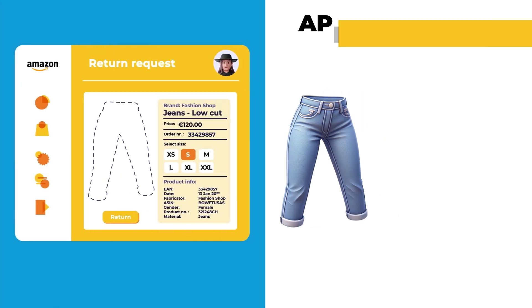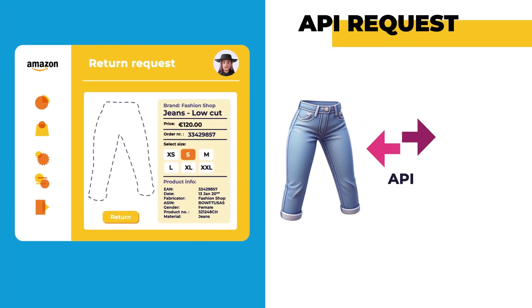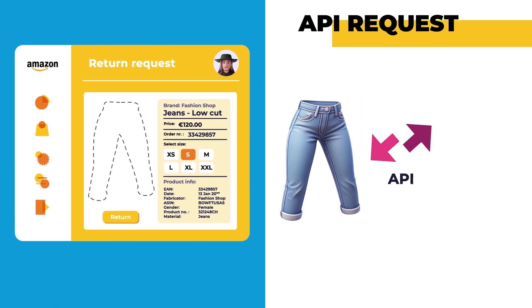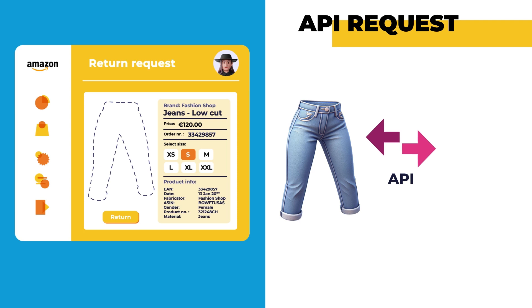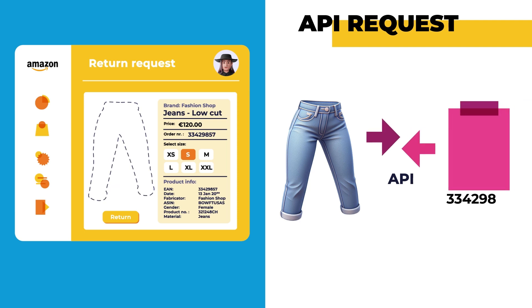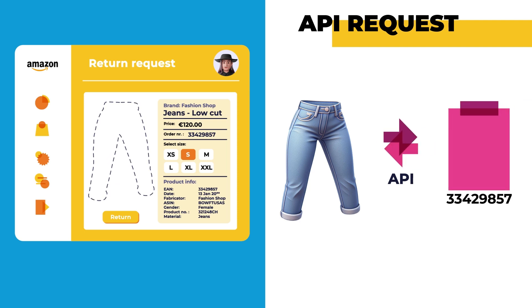Similarly to orders, we create an API request that requests an open return. The return is linked to the original order number so that we can match them to the order.